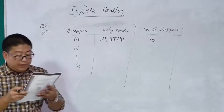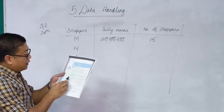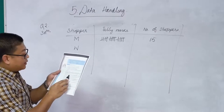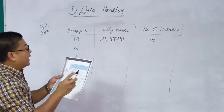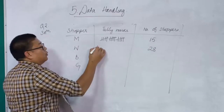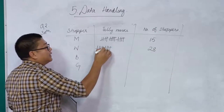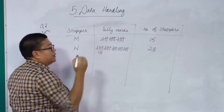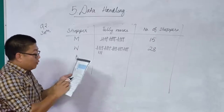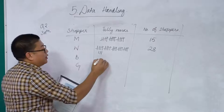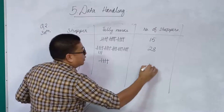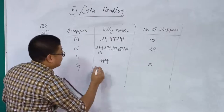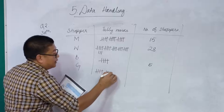Next, counting W for women: going through the data, W appears 28 times — we record this with tally marks showing five groups of five plus three, giving 28. For boys, counting through the data gives only 5 occurrences. For girls, counting gives 12 occurrences, recorded with two groups of five plus two.